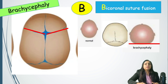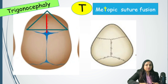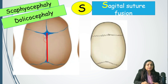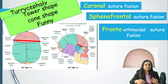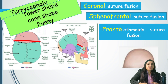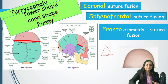If it is bicoronal fusion, it is called brachycephaly. If it is metopic suture fusion, it is called trigonocephaly — and the shape of the head is triangular. If it is sagittal suture fusion, it is called scaphocephaly or dolichocephaly. If it is turricephaly, it means a tower-shaped head — involving coronal, sphenofrontal, and frontoethmoidal suture fusion. A useful mnemonic: tower shape.